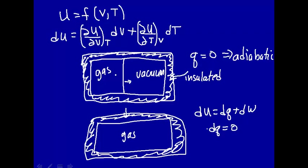This is pV work, so dw equals minus P dV, and I claim that's equal to zero. Why? The gas is expanding against a pressure of zero — it's a vacuum. So P dV, which is what the work equals, has pressure equal to zero. So even though the volume changes, it's changing against an external pressure of zero, so the work is zero.